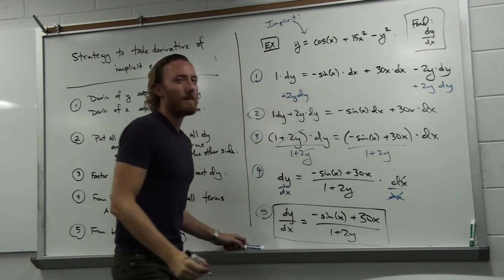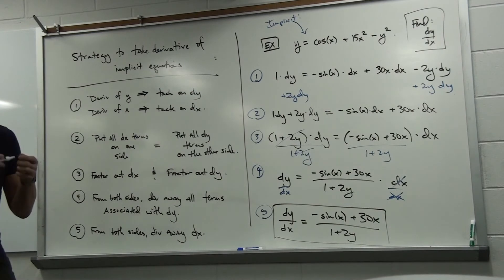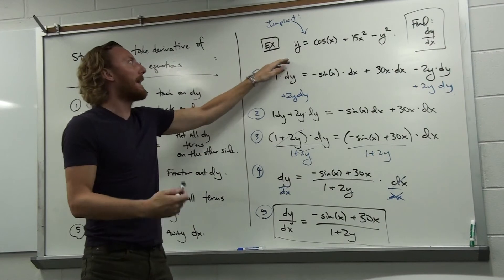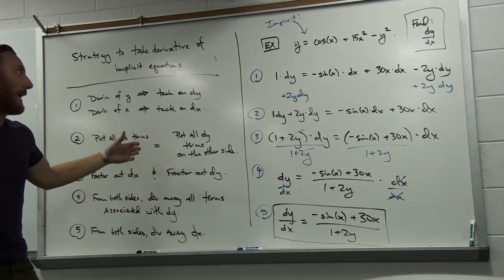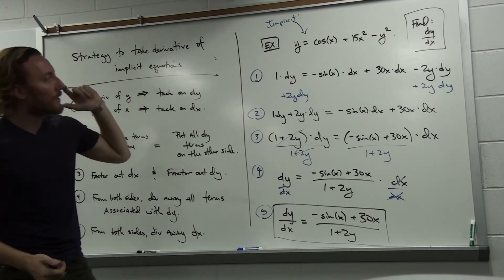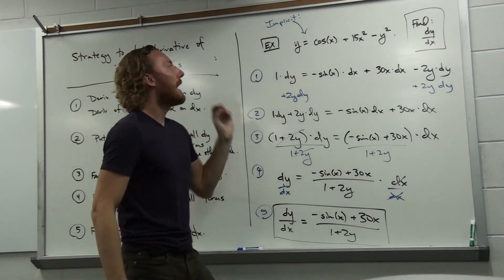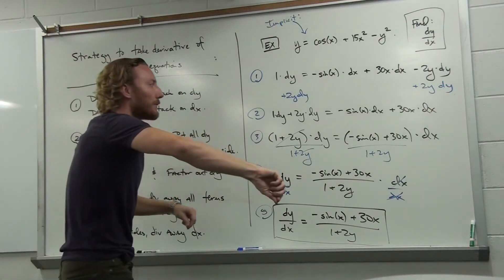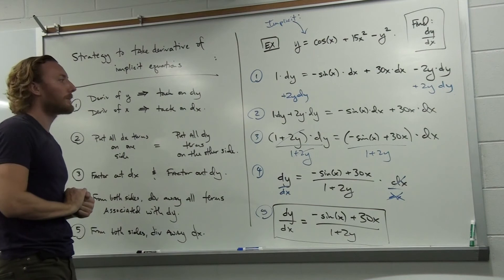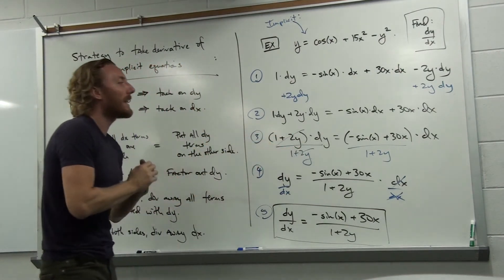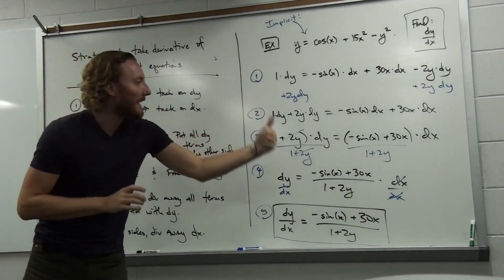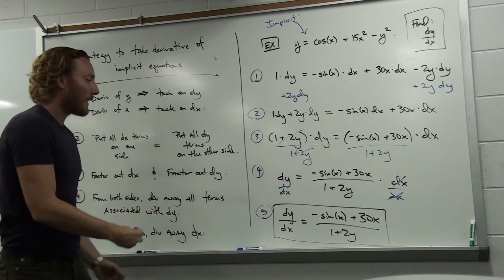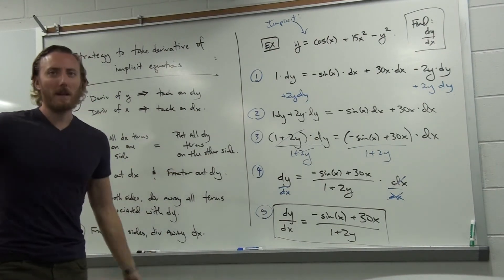Yes, this takes time, effort, and energy. But here is an equation that is not explicitly stated, and we can still take the derivative — and the fact that it's doable is kind of cool. Every time you take the derivative of y, tack on a dy. Every time you take the derivative of x, tack on a dx. Get all the dy's on one side, get all the dx's on the other, and factor out those dx and dy terms. To get dy by itself, divide away everything associated with the dy. Then divide dx from both sides, and the result is dy over dx with everything else on the other side.